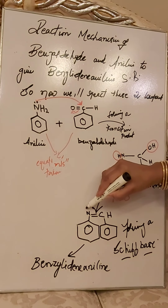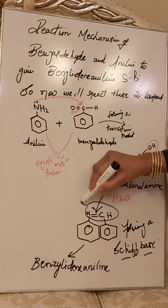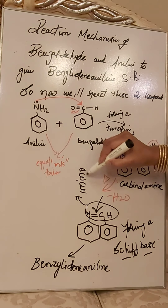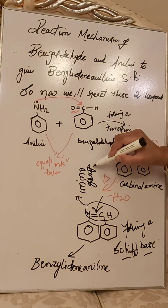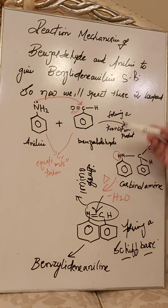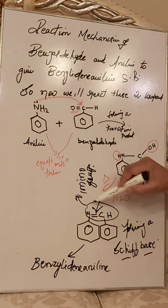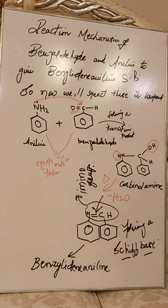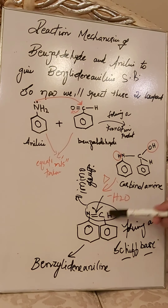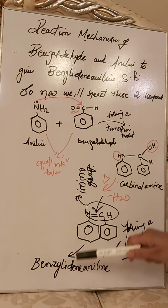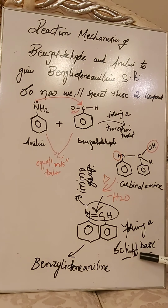This N=CH is called an azomethine or imine group. If someone asks you how to identify that a Schiff base has formed, you simply say that the presence of the N=CH group confirms it. The compound we obtained is benzaldehyde aniline — a Schiff base — and the presence of the azomethine group confirms its formation.